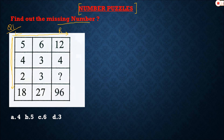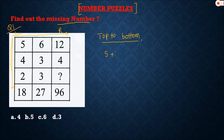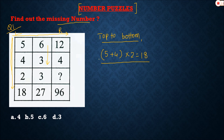From left to right we won't be able to get any logic, so let's analyze top to bottom. You can see: 5 plus 4 equals 9, and 9 multiplied by 2 gives 18. Applying the same logic to the second column: 6 plus 3 equals 9, and 9 multiplied by 3 gives 27 — and you can see 27 is there. So the logic is correct.